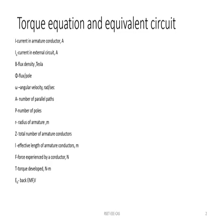For this, first we need to define some terms. Let I be the current in the armature conductor. Ia is the current in the external circuit in amps. B is the flux density in Tesla. Phi is flux per pole. Omega is angular velocity in radians per second. A is the number of parallel paths. P is the number of poles. R is radius of the armature core. Z is total number of armature conductors. L is effective length of armature conductors. F is force experienced by a conductor in newtons. T is torque developed in newton meters. And Eb is back EMF in volts.